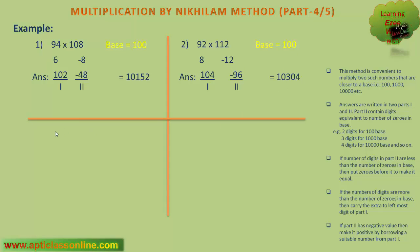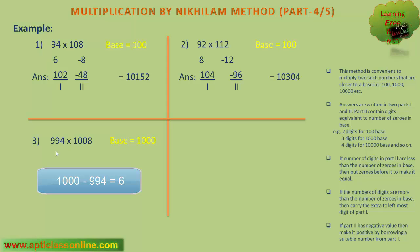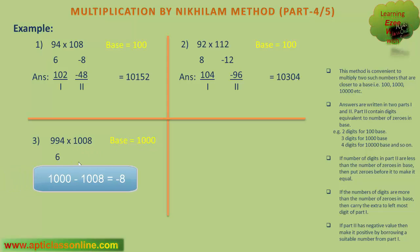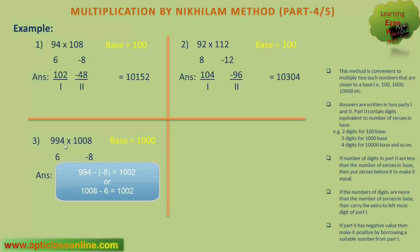Now the next question: 994 multiplied by 1008. So what is the base for this calculation? It is 1000, because both these numbers are closer to 1000. The difference between 1000 and 994 is 6, and the difference between 1000 and 1008 is minus 8. Now we can write down the answer. The first part will be the difference of 994 and minus 8, which will be 1002. And the second part will be the multiplication of 6 and minus 8, that is minus 48.